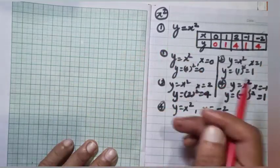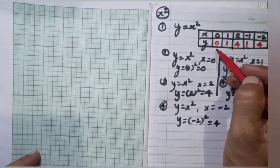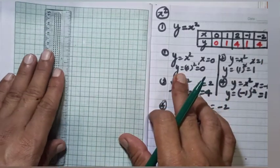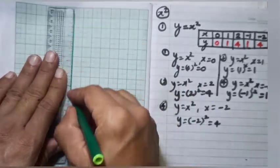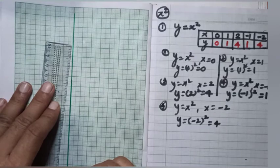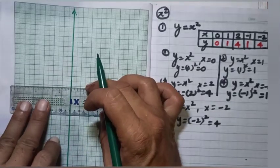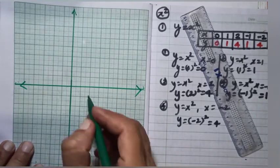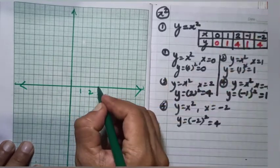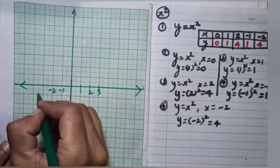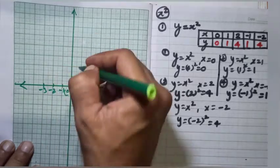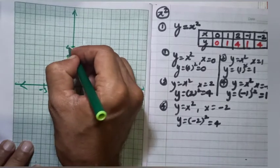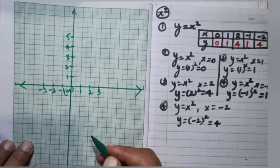Now we have the points ready — let's plot the graph. The maximum value of x is minus 2 and plus 2, and the maximum value of y is 4. We need to mark the origin at 0. On the x-axis we mark 1, 2, minus 1, minus 2. On the y-axis we only have positive values, so we mark 1, 2, 3, 4, 5.